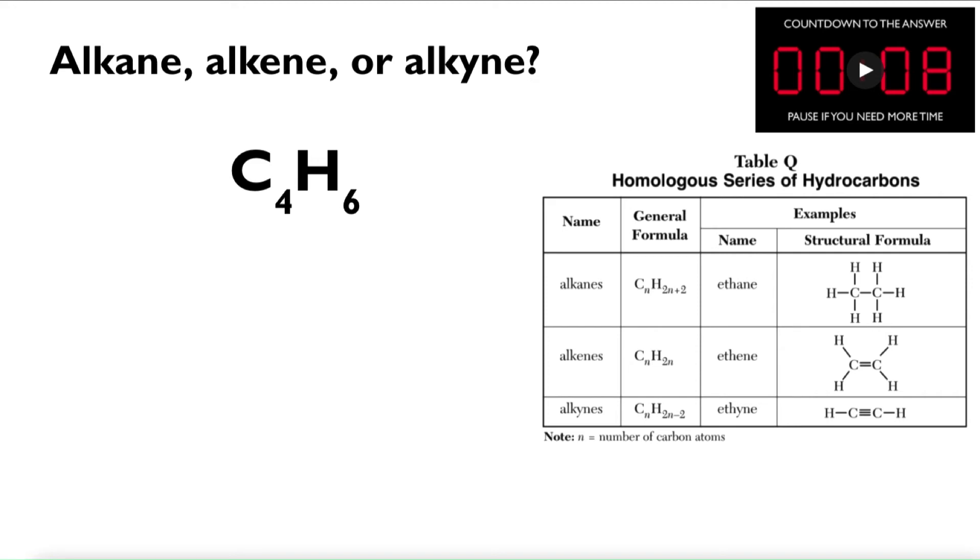Let's look at another example, very similar. C4H6. Alkane, alkene, or alkyne. So C4H6 would be an alkyne because if I look at that formula for C4H6, that matches CnH2n minus 2. The best way to figure this out is to guess and check, right?